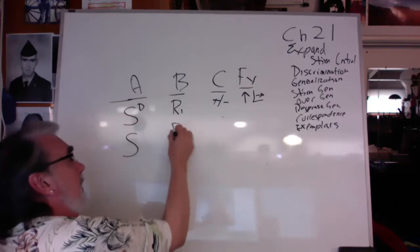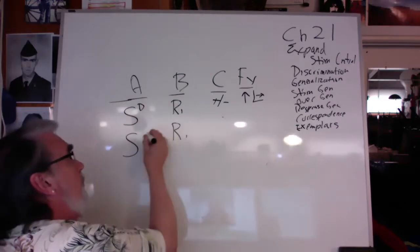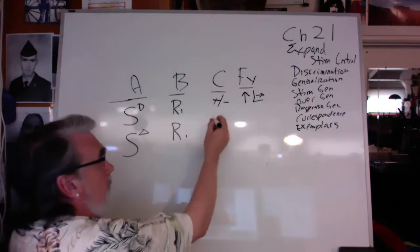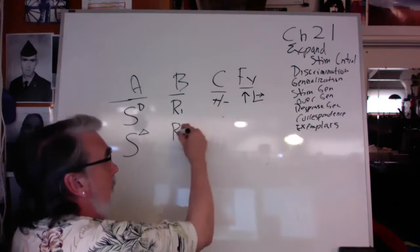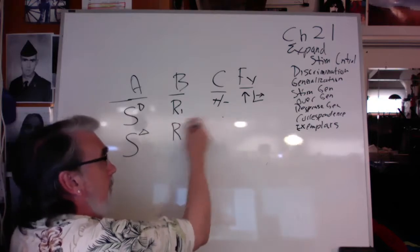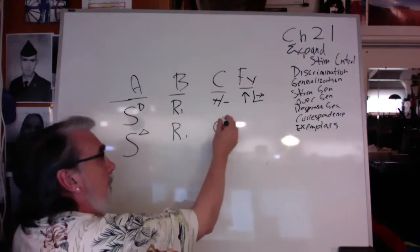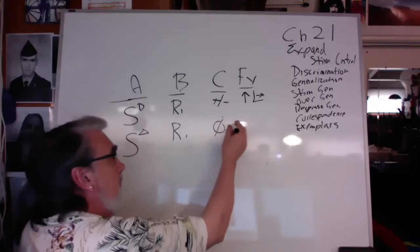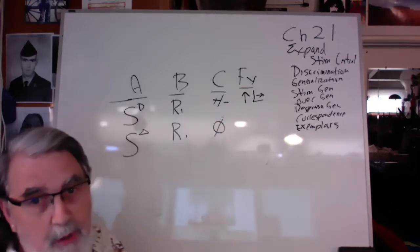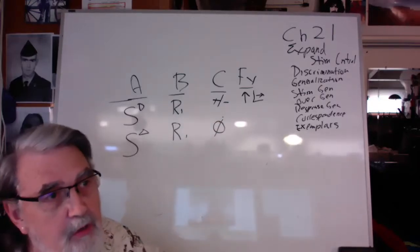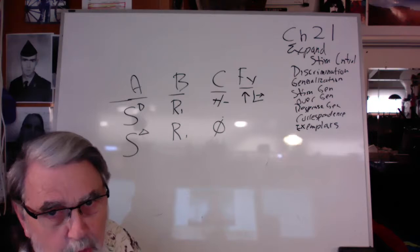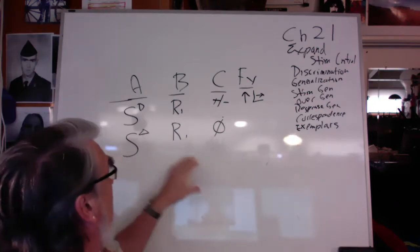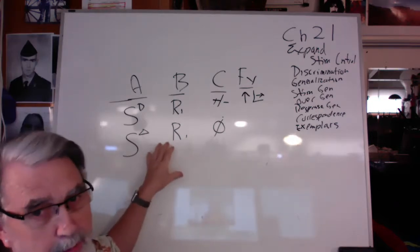If we respond to other stimuli, that becomes an S-delta, because when they respond to the wrong stimulus, we don't do anything with consequences. So in order to get stimulus control — before we can expand — we have to get stimulus control, we have to do discrimination training.